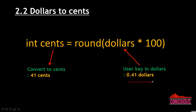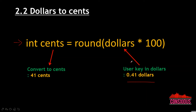Once we have the dollar value, we need to convert it into cents for our calculations. Using more decimal places introduces more floating-point error, so to simplify the program we use a rounding formula to convert to cents. This formula is already provided in the CS50 problem specification. For example, when the user keys in 0.41 dollars, it will convert to 41 cents.